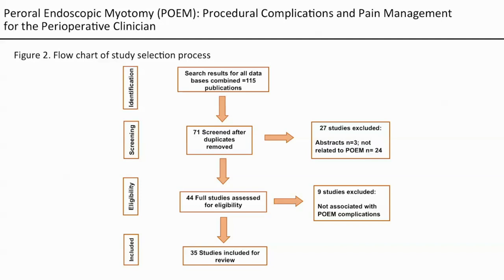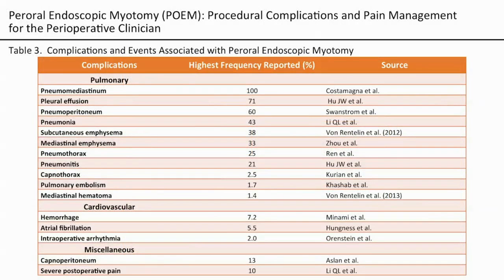We performed a search of the medical literature according to the PRISMA guidelines for reported complications of the POEM procedure. Thirty-five manuscripts were included in our review. Our literature review revealed a wide range of potential complications of interest to perioperative clinicians, notably pneumocapnoperitoneum and pneumocapnothorax, but also more serious events like capnopericardium and aspiration.